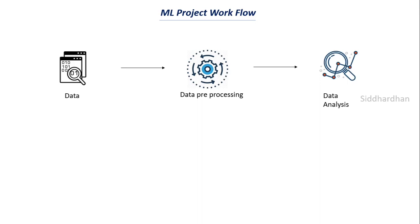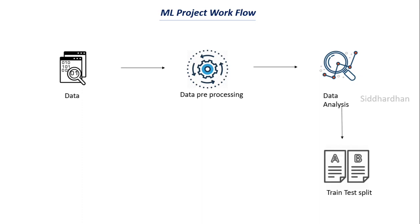Once we do the pre-processing, we analyze the data to get meaningful insights. A dataset may contain 10 or 20 columns, which we call features. We need to find which feature is important for prediction, making plots and analysis to see which features matter. Once we analyze the data, the next step is to split the original data into training data and testing data — this step is known as the train-test split, which is what we are going to see in this video.